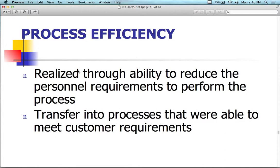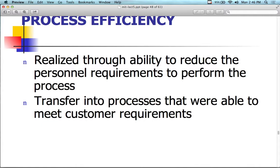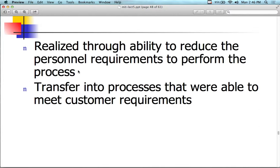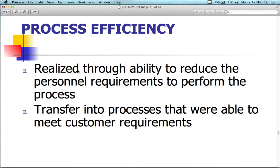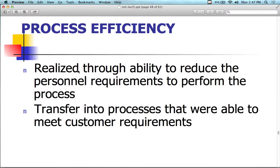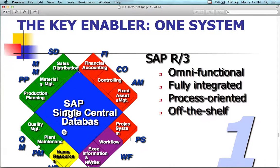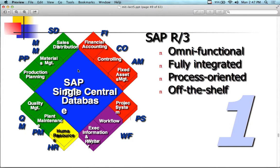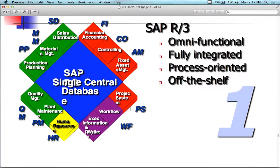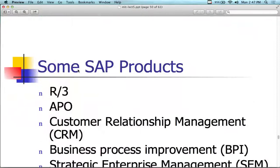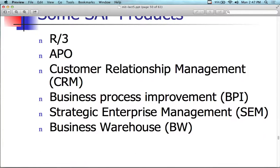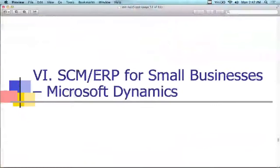It gives us efficiency — process efficiency — realized through the ability to reduce the personnel required to perform a process. The key enabler here is one system: an omni-functional, fully integrated, process-oriented, off-the-shelf solution — you plug it in and it works. That's what the goal of some of these SAP products is: to give you a solution covering customer relationship management, business process re-engineering, strategic enterprise, business warehouses, and similar functions.